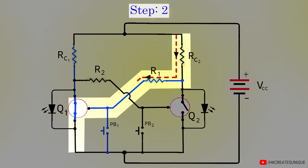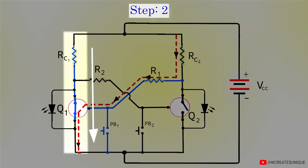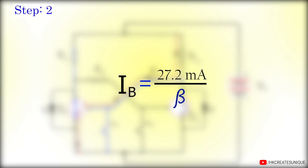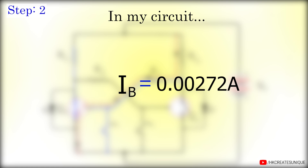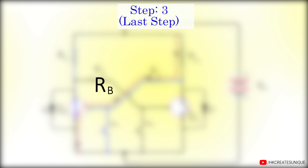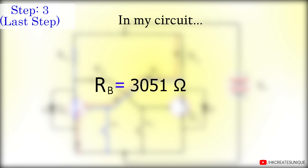The second step is to find the base current. Base current IB equals the collector current IC divided by the current gain beta of the transistor. The collector current is 27.2 milliamps. The current gain beta can be assumed to be 10, because we want excess base current to strongly turn the transistor on. So the base current IB equals 0.00272 amperes, or 2.72 milliamps.